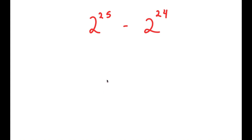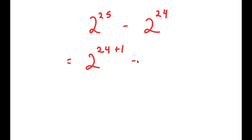To solve this, I'm going to first start by rewriting 2 to the power of 25 as 2 to the power of 24 plus 1. So I have this minus 2 to the power of 24.